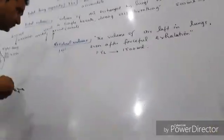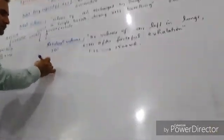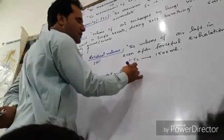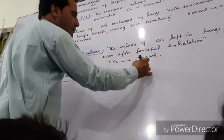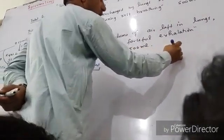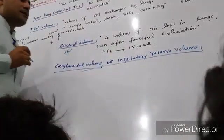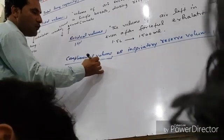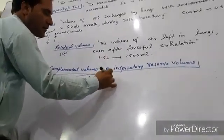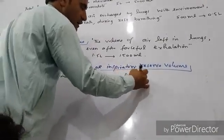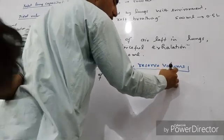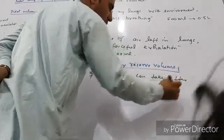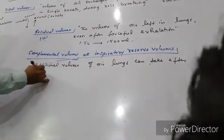Your blood terminology is just a really complementary value. It is also called inspiratory reserve volume. How do you define it? Additional volume of air the lung zone can take after a normal rest inhalation.